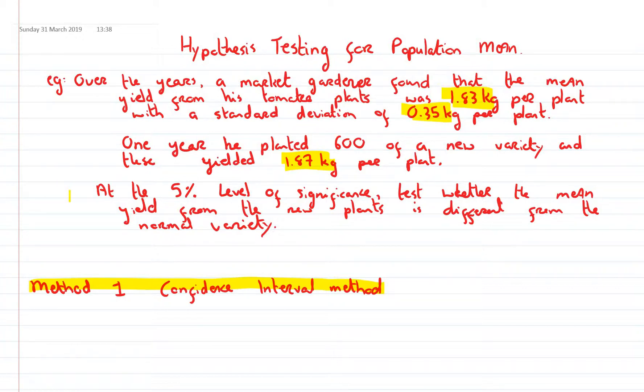One year he planted 600 of a new variety and the yield was 1.87 kg per plant. At the 5% level of significance, which basically is the 95% confidence interval, test whether the mean yield from the new plants is different from the normal variety.